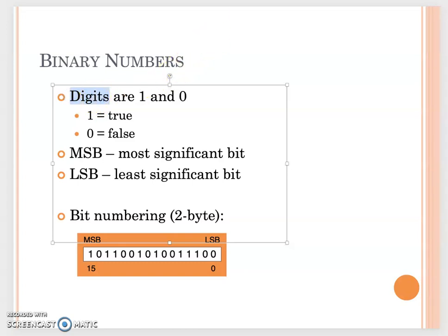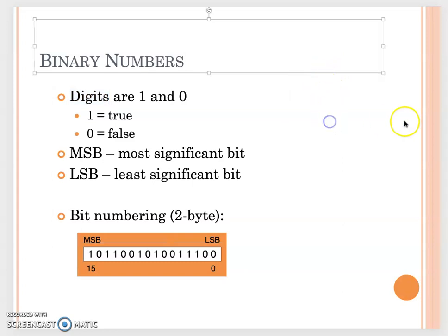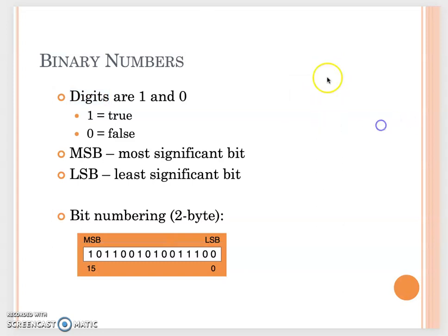In real life, we use a decimal system. A digit in real life — for example, the number 19 has one digit per position. In real life we use the decimal system, where each digit starts from 0 and can go up through the decimal range.